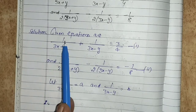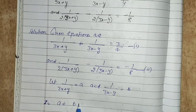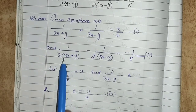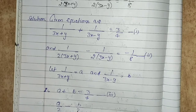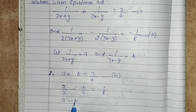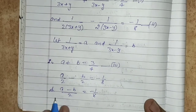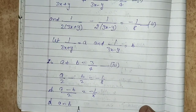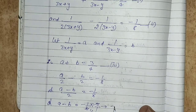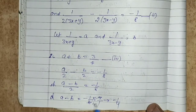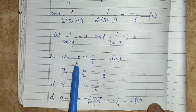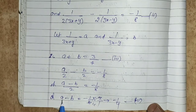Substituting the assumptions, the first equation becomes a plus b equals to 3 upon 4. This is equation number 3. The second equation becomes a by 2 minus b by 2 equals to minus 1 by 8. Taking LCM, a minus b divided by 2 equals minus 1 by 8, so a minus b equals to minus 1 by 4. This is equation number 4.